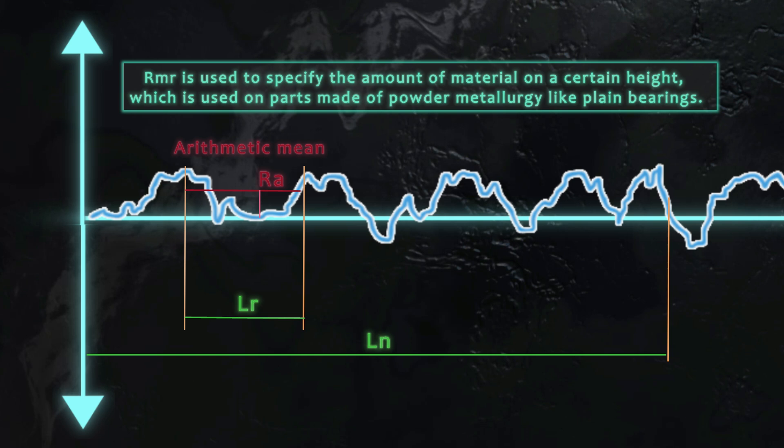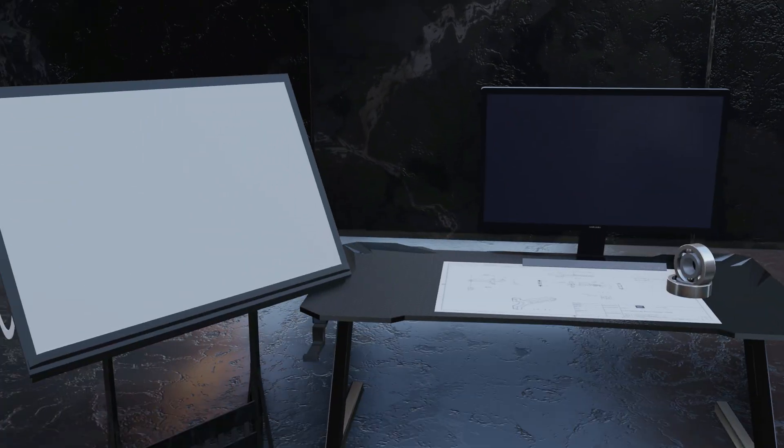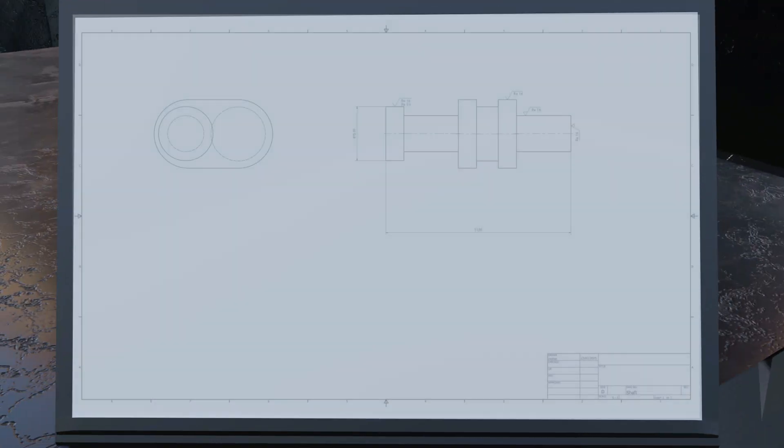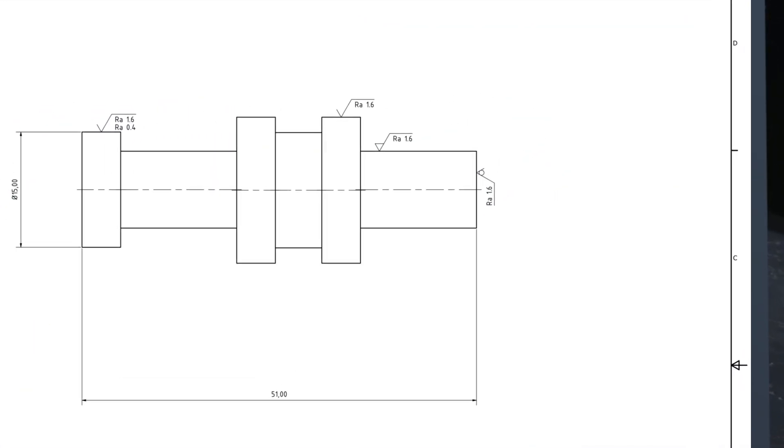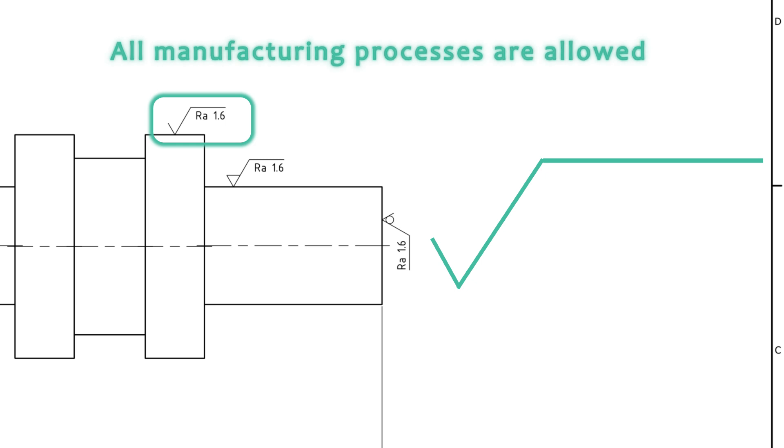Now that we know the important parameters used to specify the surface roughness, let's look at how these are inserted into drawings. There are three symbols to use to indicate the type of surface texture. The basic symbol simply says that all manufacturing processes are allowed.